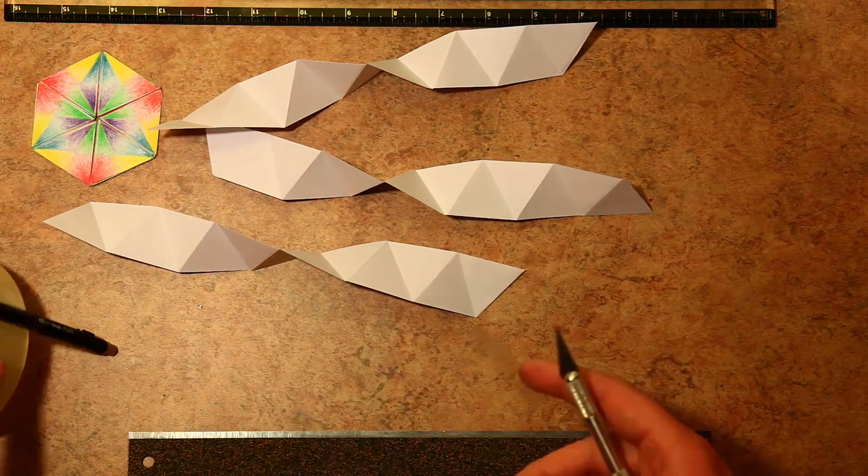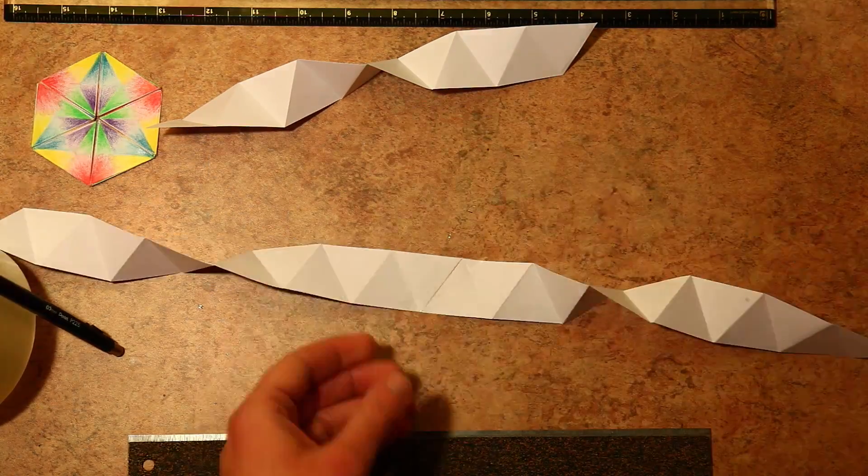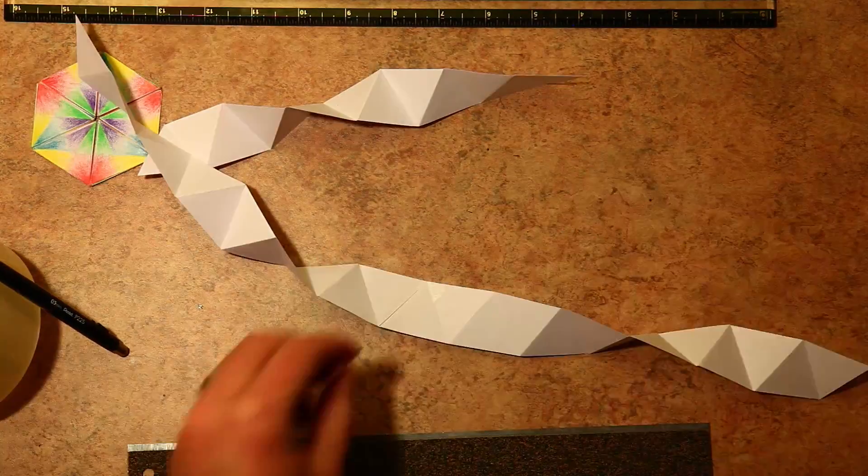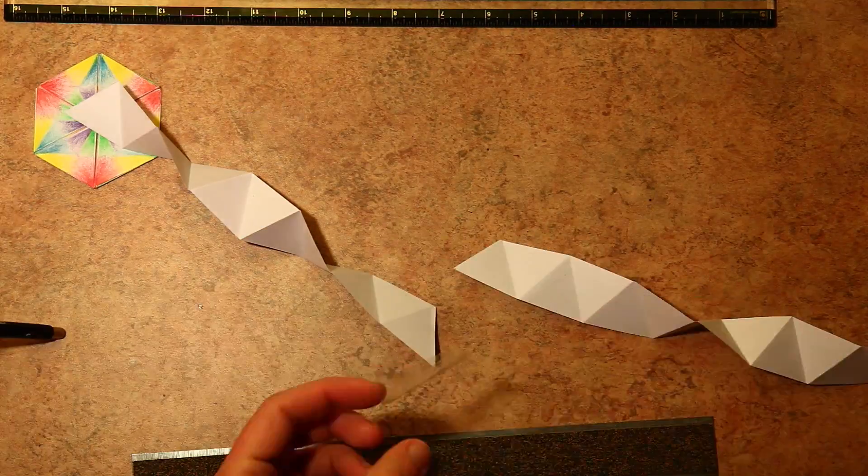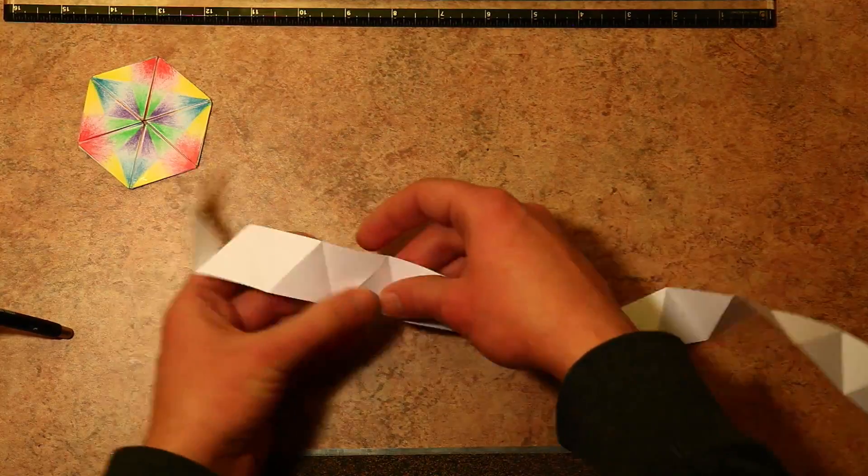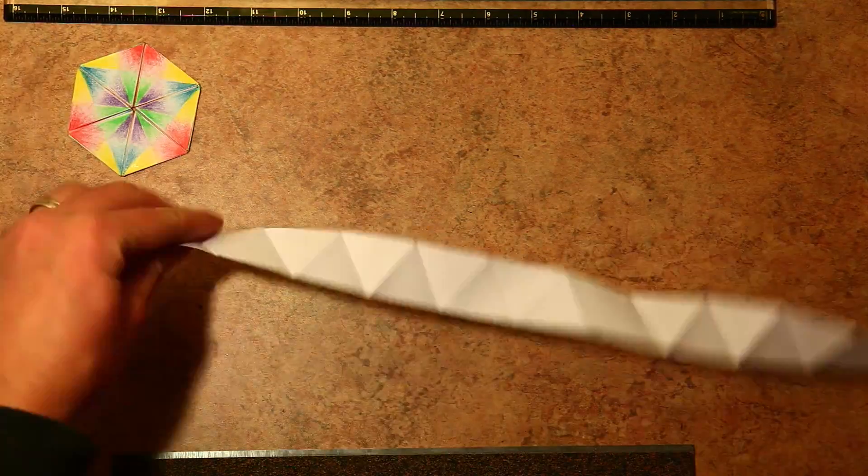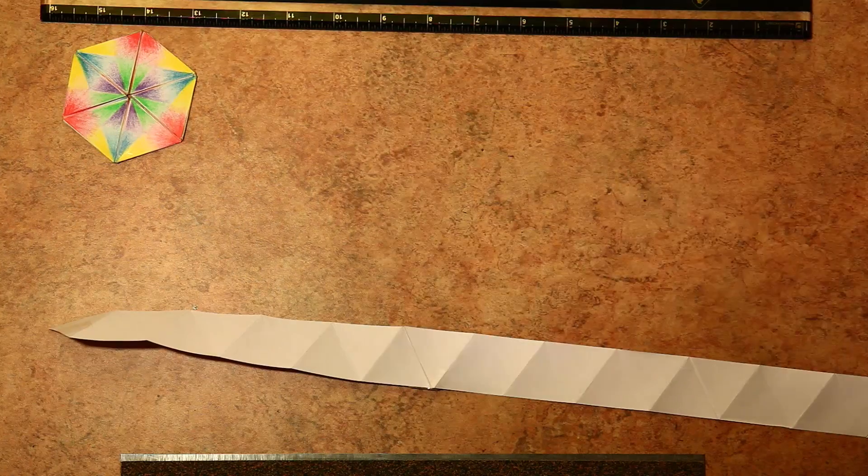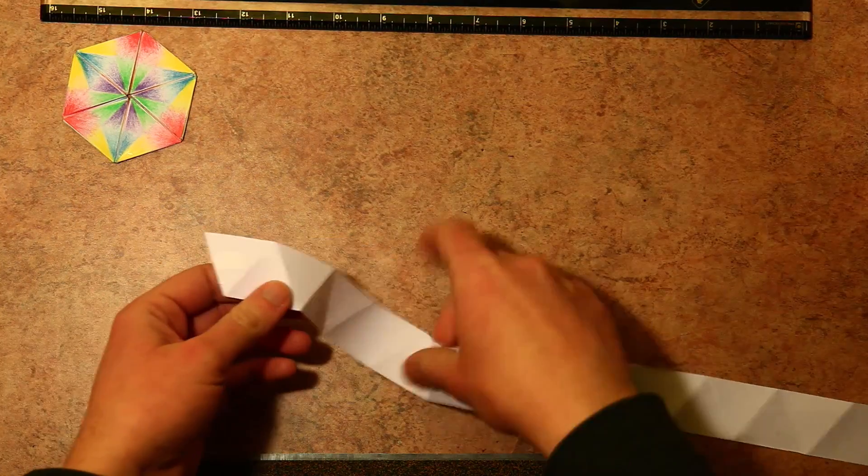Now once we have these cut out we need to join them together. I like to use packing tape because it's pretty strong and can withstand quite a few folds. And once we have these together we need to count out 36 triangles. Measure twice, cut once. Now we can start folding.